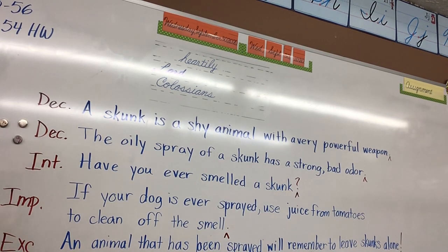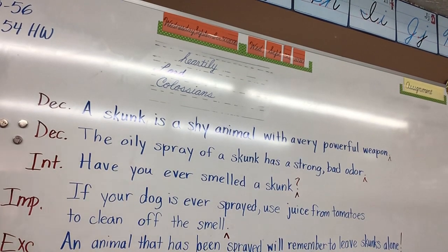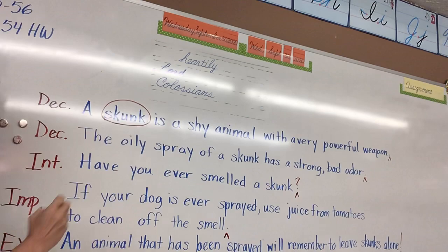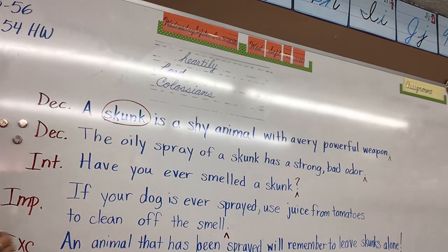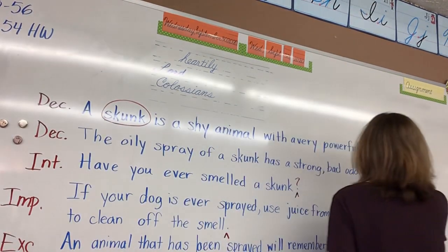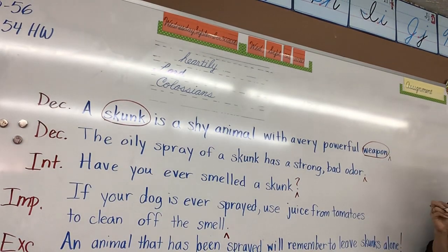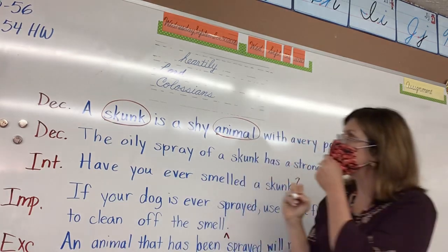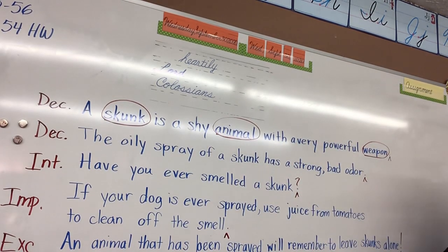Now we're going to go back and do these sentences again, but this time we're just going to tell what the nouns are. 'A skunk is a shy animal with a very powerful weapon.' Skunk is a noun. Give me another noun — weapon. Very good. And animal. That's all the nouns in that sentence.